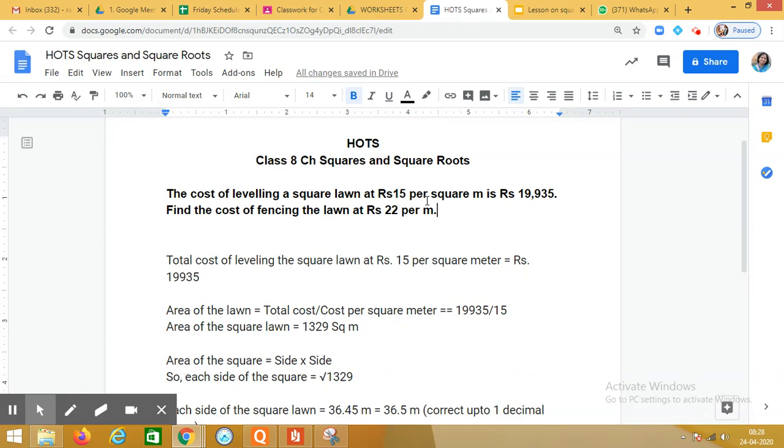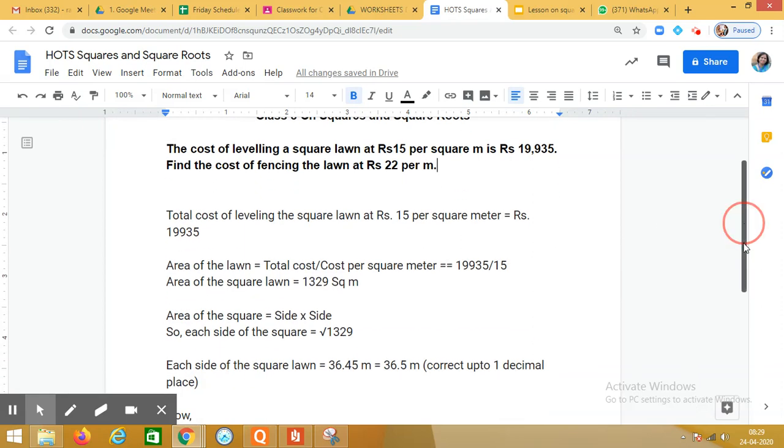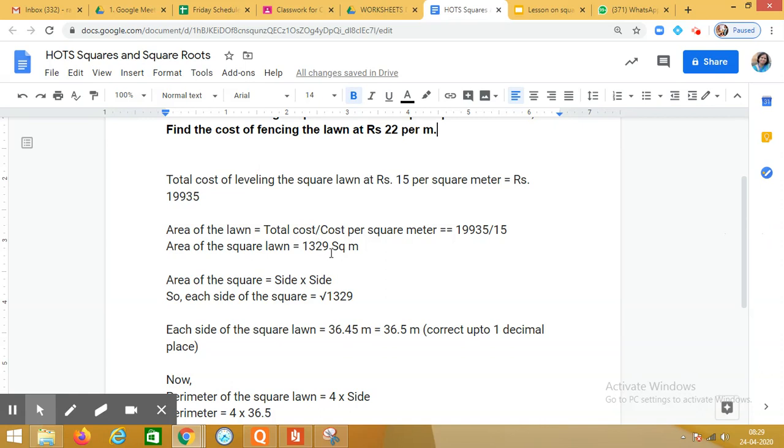Now in this question, we are given the cost of leveling the square lawn at rupees 15 per square meter as rupees 19,935. Can you tell me what will be the area of the lawn? You are right. Area of the lawn will be equal to the total cost divided by cost per square meter. Let us simplify this. We will get 19,935 divided by 15, which gives us 1,329. This will be the area of the square lawn, that is 1,329 square meters.